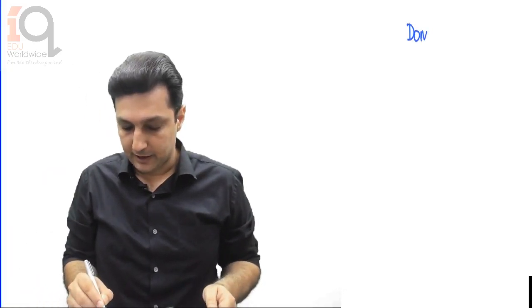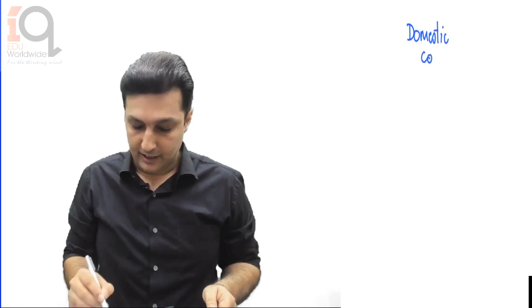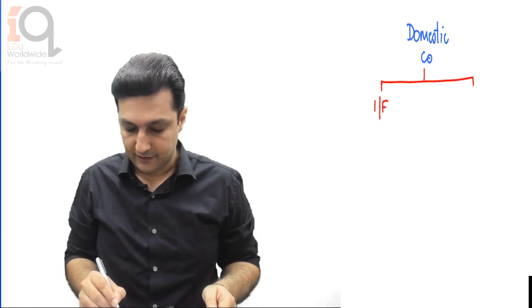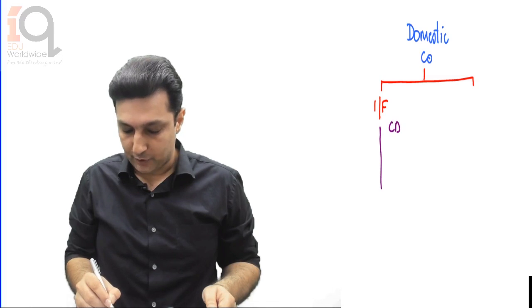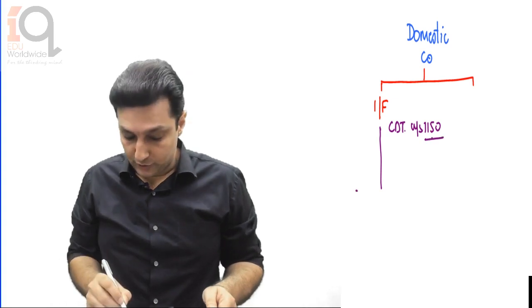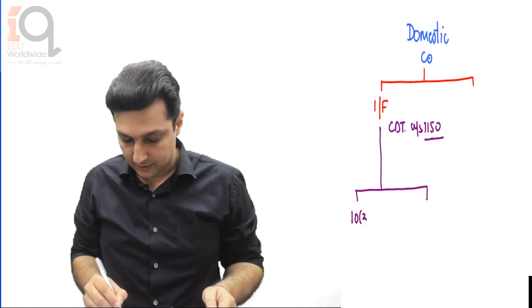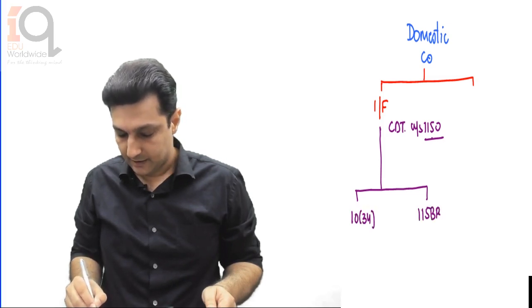What we need to know is that dividend declared by a domestic company, whether it's an interim dividend or a final dividend, we know that the company has to pay a corporate dividend tax. This is under a section called 115O. There are two sections that we need to remember: section 10(34) and section 115BBDA.